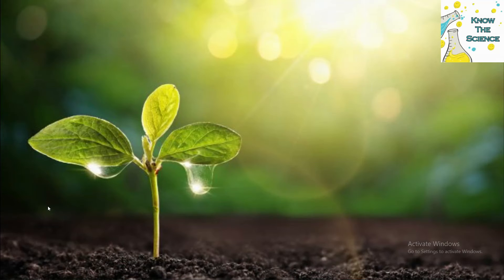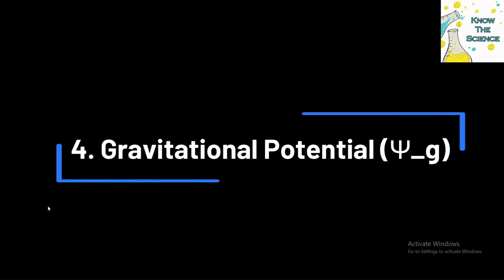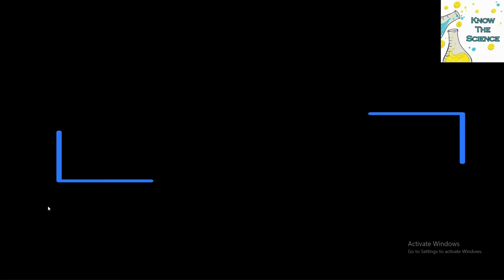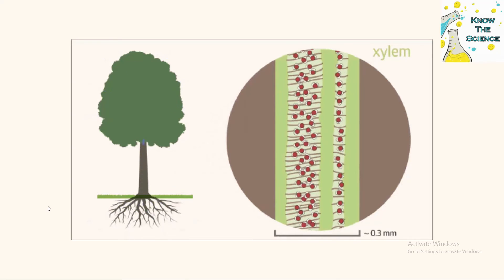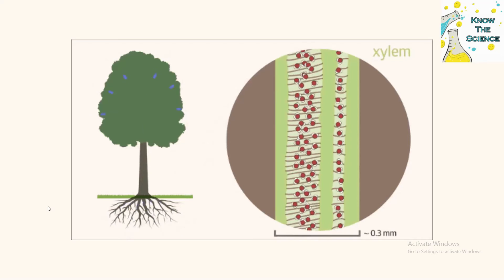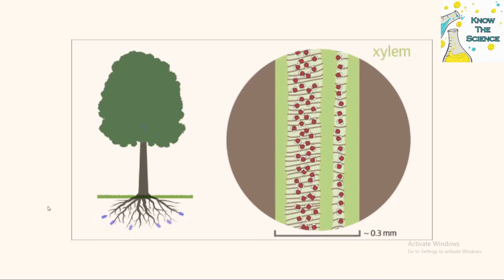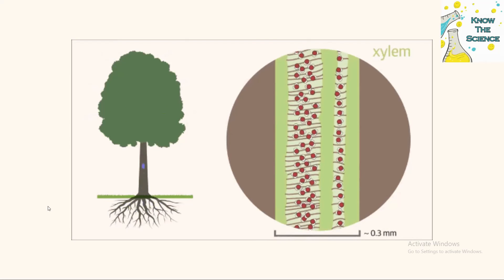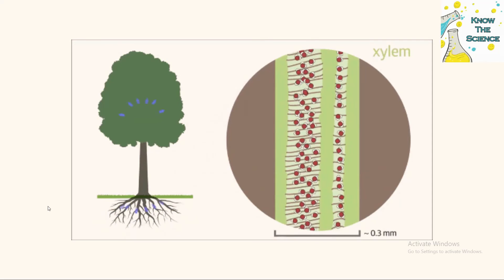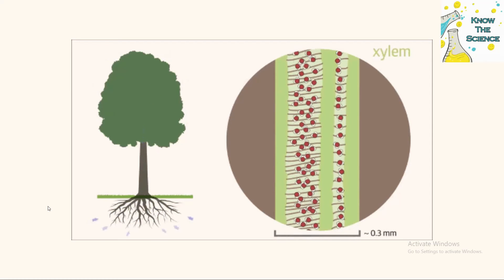Gravitational potential is relevant in tall plants or columns of water where gravity influences the movement of water. It's typically negligible in small plants but becomes significant in tall trees or in situations where water moves vertically.